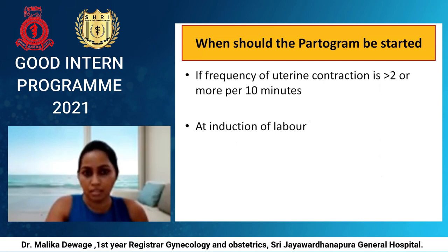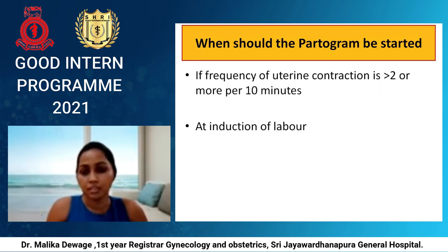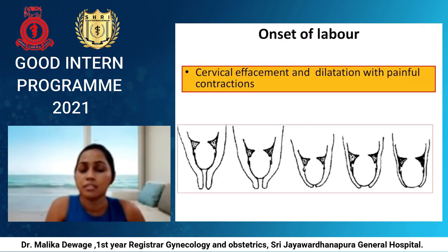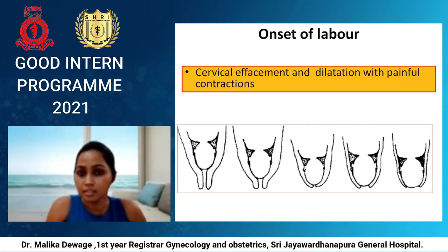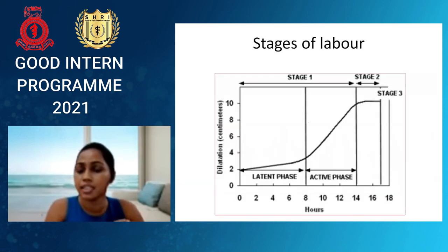Before we start, we should know some core knowledge about the partogram. When should the partogram be started? If frequency of uterine contraction is more than 2 per 10 minutes, we have to start a partogram, or at an induction of labour irrespective of the number of contractions and the dilatation of the cervix. Onset of labour is when there are gradual cervical changes with dilatation and painful contractions — all three things together.